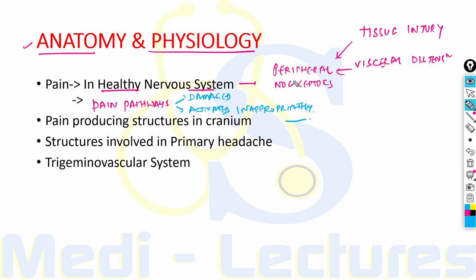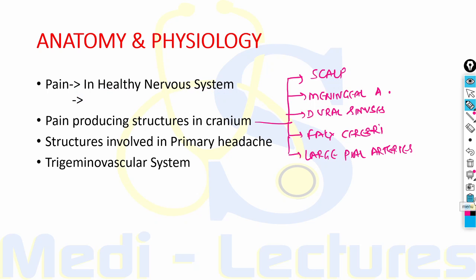In a healthy nervous system, when the peripheral nociceptors are being stimulated due to tissue injury or visceral distension, it can cause headache. It can also be due to pain pathways in the nervous system that are either damaged or activated inappropriately. The pain-producing structures in the cranium are the scalp, meningeal arteries, dural sinuses, falx cerebri, and the proximal part of large pial arteries. On the other hand, the ventricle, choroid plexus, pial veins and most of the brain parenchyma are pain insensitive.